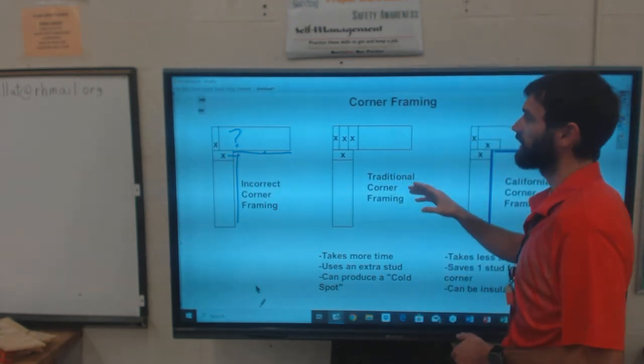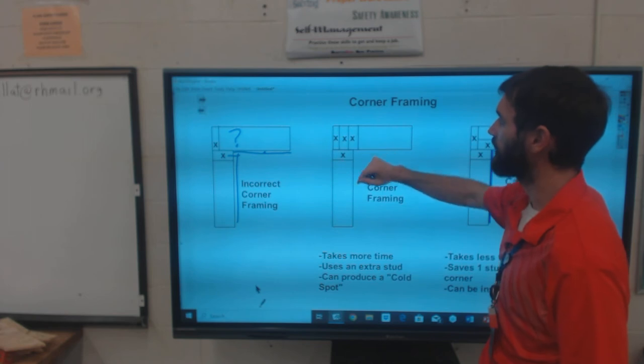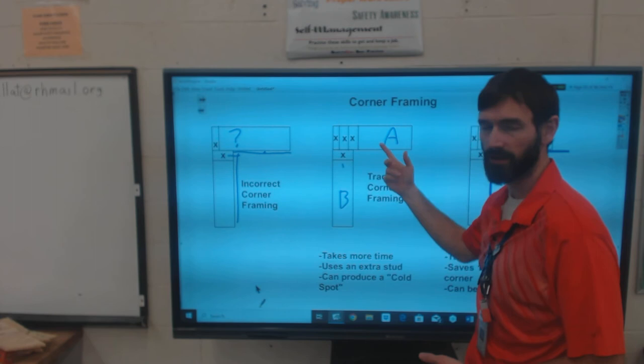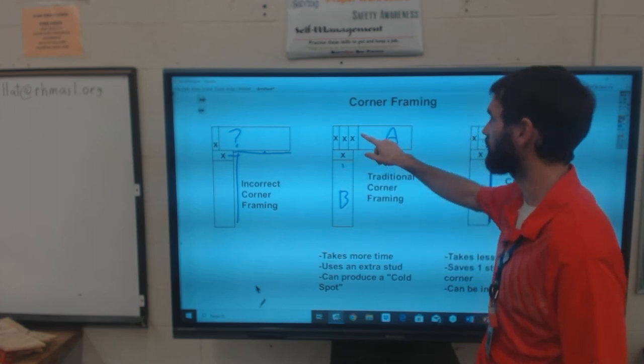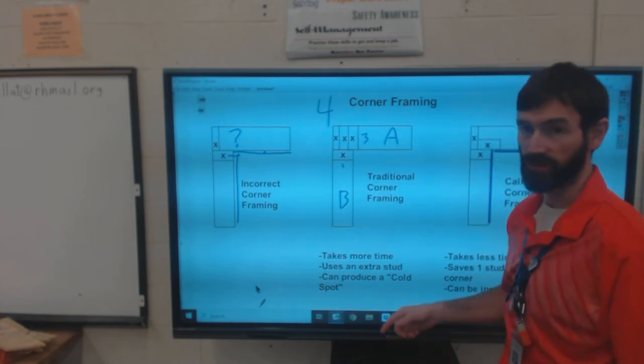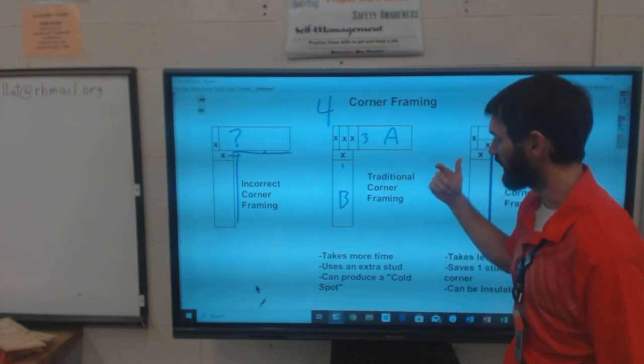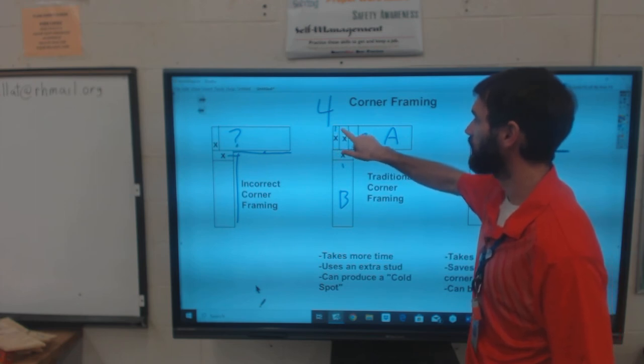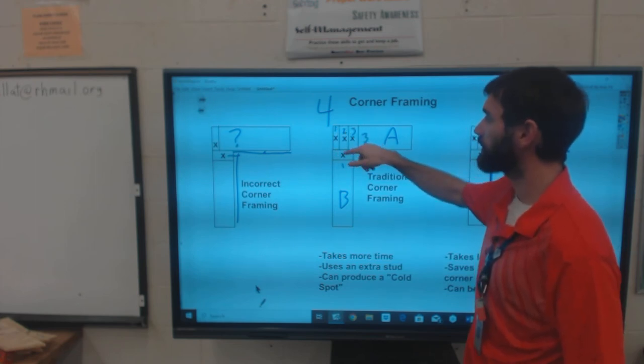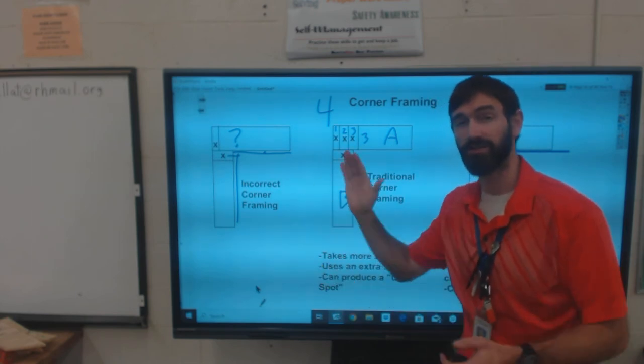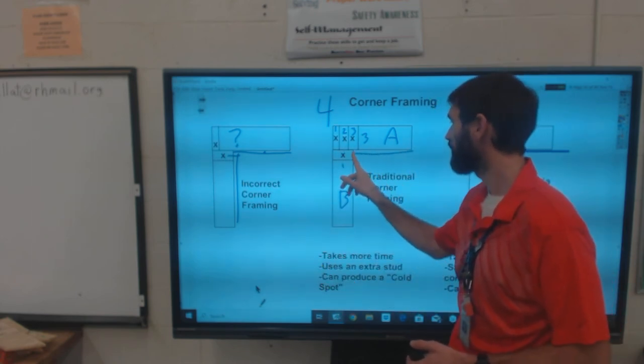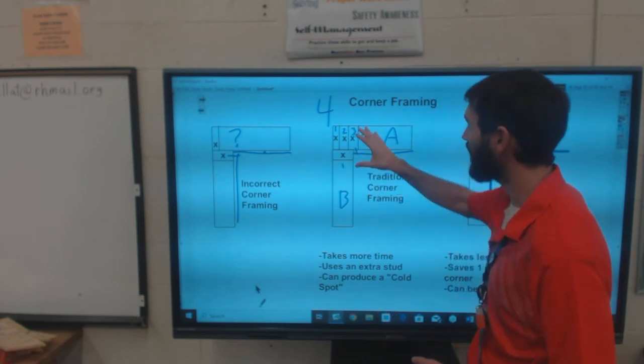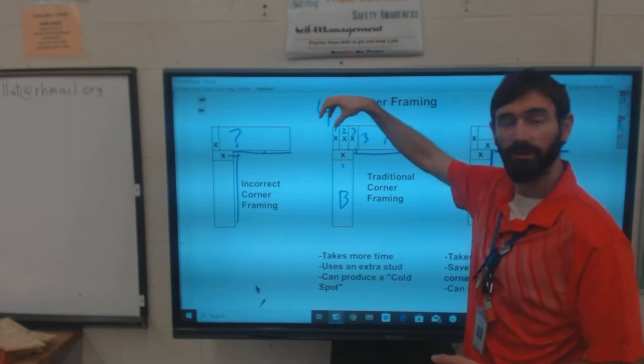The traditional corner - what they do is take three studs and pack them here in the end of wall A, and the end of wall B is just one single stud. So all together you have four studs. But to do this, it takes more time and uses an extra stud here in the middle. Stud two is completely unnecessary other than to just space it out so you have enough room to attach your interior drywall or wall cover. And because it's all solid, it could produce a cold spot.